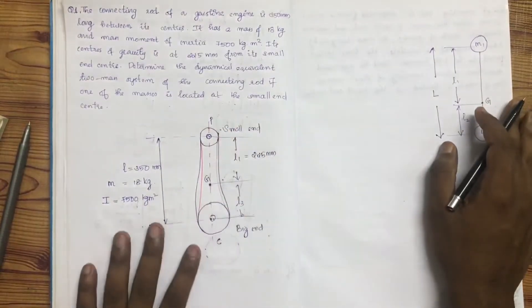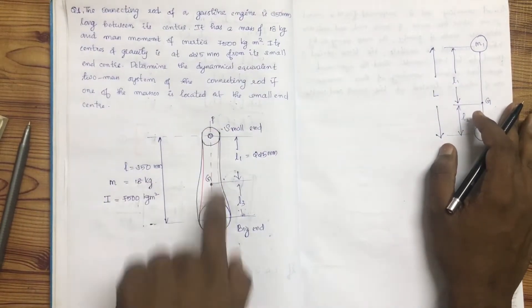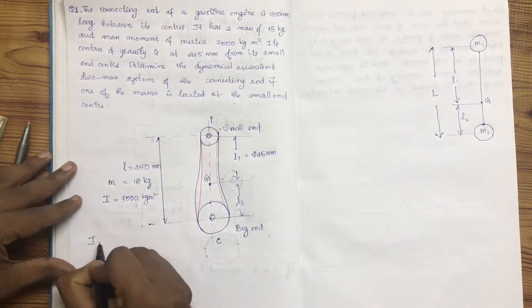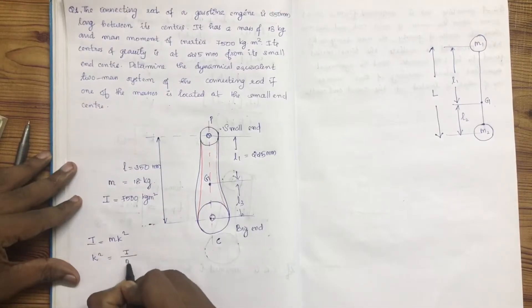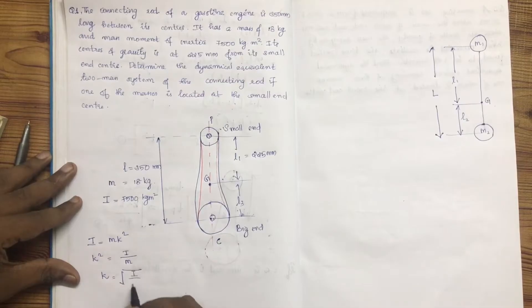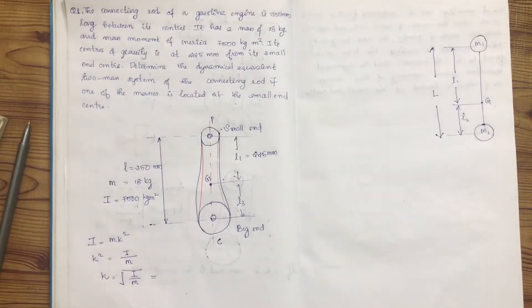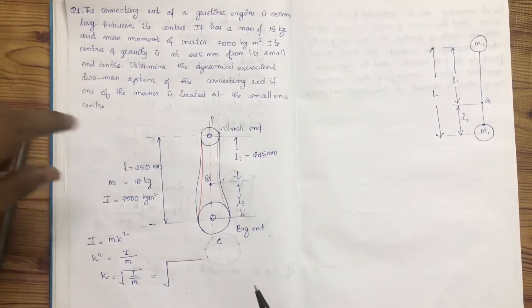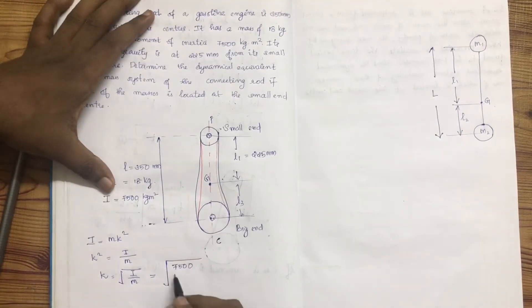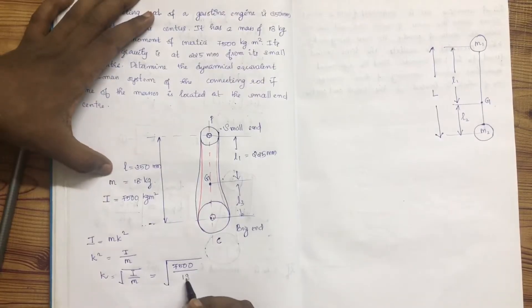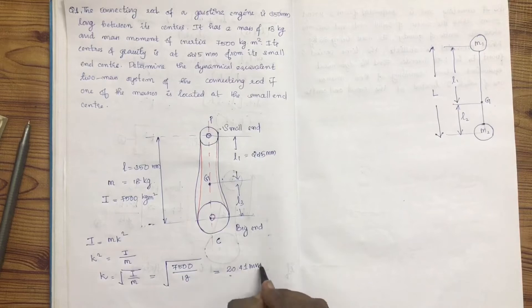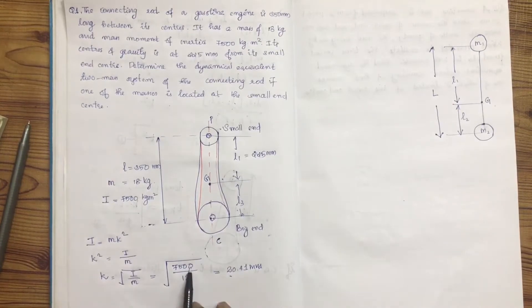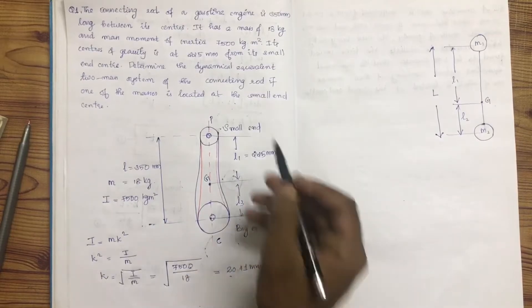In this case, we find k². The radius of gyration k² is equal to I divided by m, that is 7500 divided by 18. The result is 20.41 mm.